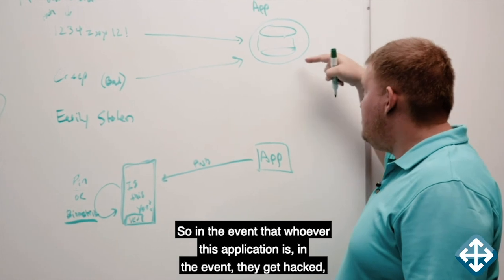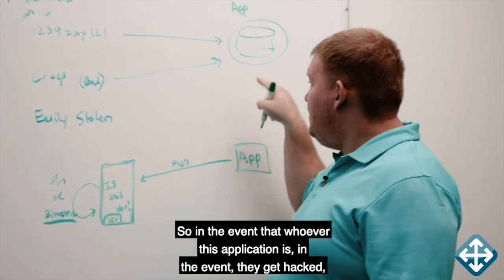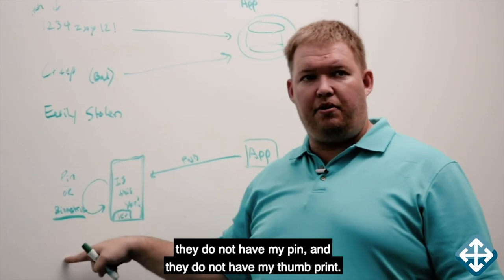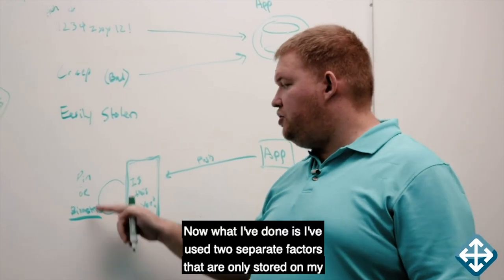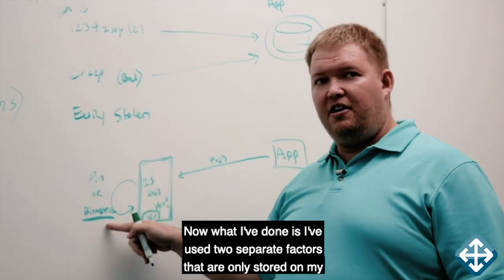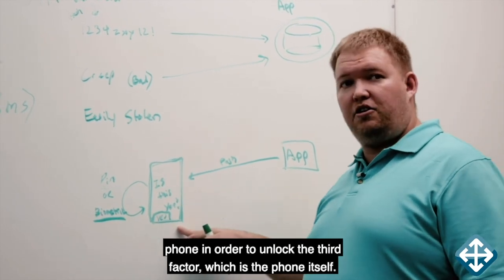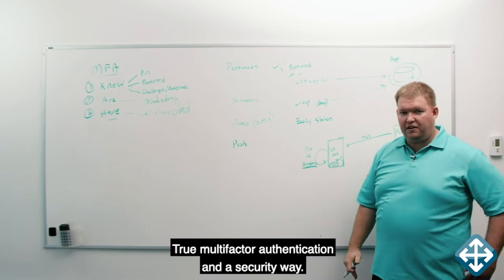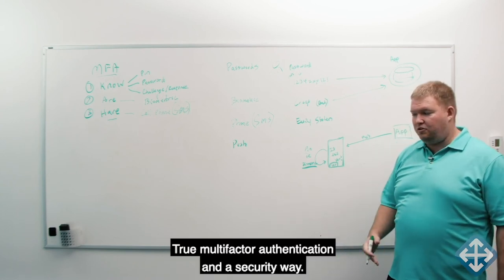So in the event that whoever this application is, in the event they get hacked, they do not have my pin and they do not have my thumbprint. Now what I've done is I've used two separate factors that are only stored on my phone in order to unlock the third factor, which is the phone itself. True multi-factor authentication in a secure way.